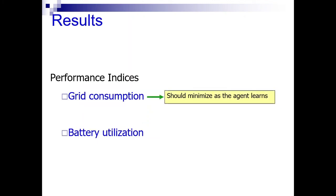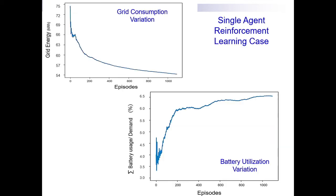Results are based on performance indices such as grid consumption and battery utilization variation that should be minimized and improved in the long run respectively. Sample results for single and multi-agent reinforcement learning models in terms of grid consumption and battery utilization variation can be presented.